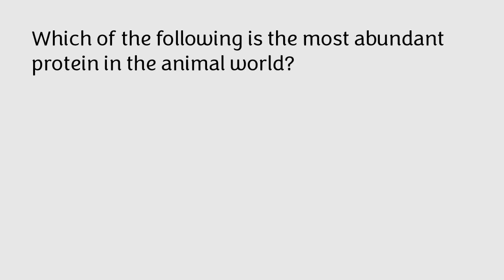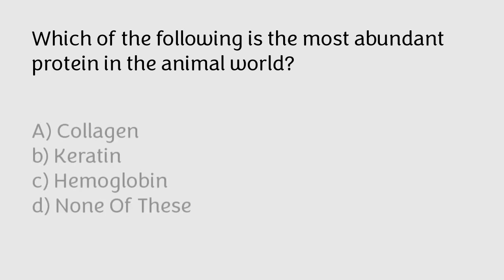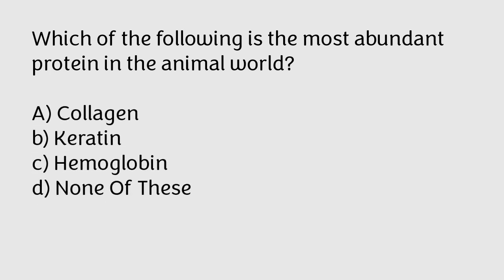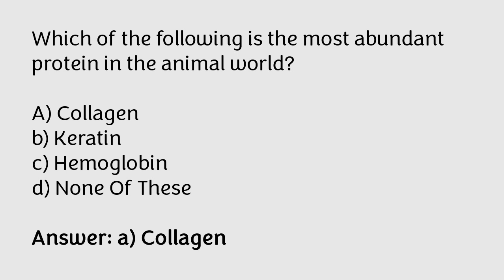Which of the following is the most abundant protein in the animal world? Collagen, keratin, hemoglobin, none of these. The correct answer is option A. Collagen is the most abundant protein in the animal world.